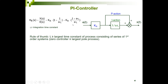We can also write it using one fraction: KR times (1 + S·tau_i) divided by (S·tau_i), where tau_i is the integration time constant. The controller has the gain KR, the proportional part, and the integration part 1 over S·tau_i. A rule of thumb for tuning is that the time constant tau_i should be approximately equal to or somewhat greater than the largest time constant of the process.